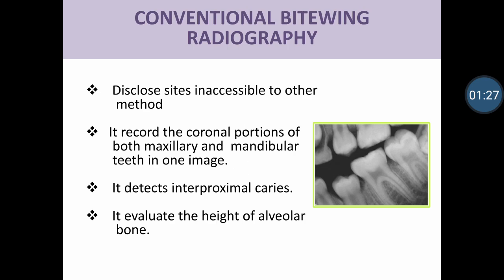A conventional bite-wing radiograph discloses sites inaccessible to other methods like visual or tactile methods. It records the coronal portion of both maxillary and mandibular teeth in one image and detects interproximal caries. It also evaluates the height of alveolar bone. These are the various advantages of bite-wing radiographs in detecting interproximal caries where we do not have direct access by visual or tactile methods.